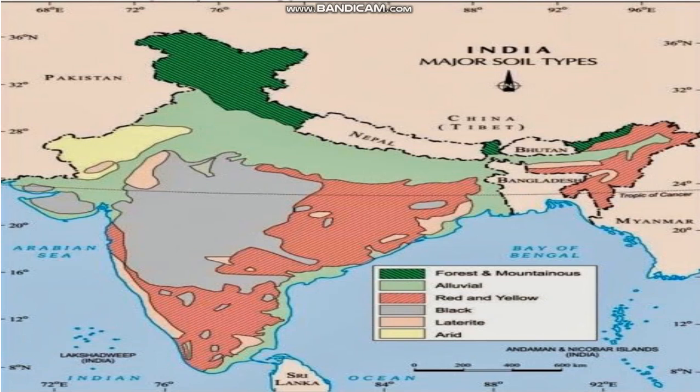Apart from these four types of soil, there is desert soil and mountain soil also. In yellow color you can see desert soil, which is found in Rajasthan and Jammu & Kashmir. Where you can see dark green color, this is forest or mountainous soil, also called mountain soil.